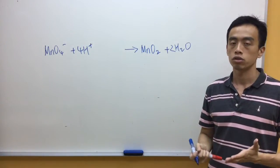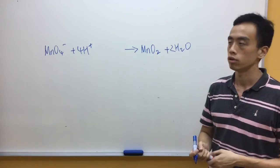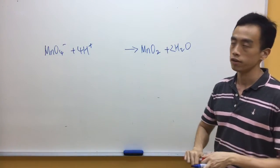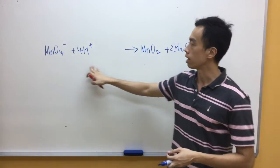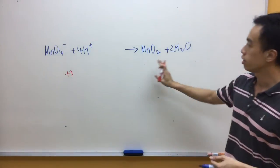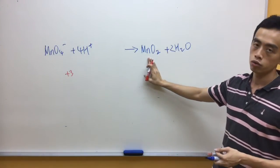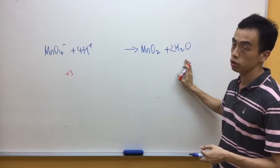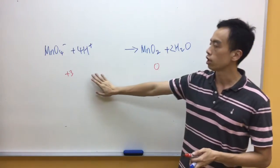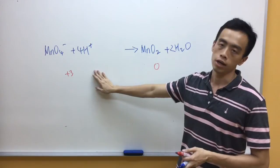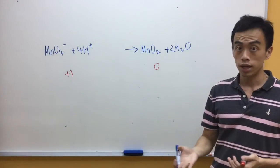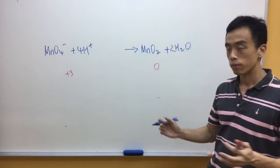Lastly, I have to balance the charge using electrons. The total number of charges on the left-hand side is −1 plus 4, giving a +3 charge. On the right-hand side, MnO₂ is neutral and water is also neutral, so zero charge. Because there are more positive charges on the left-hand side, I need to add 3 electrons on the left-hand side to balance the charges.